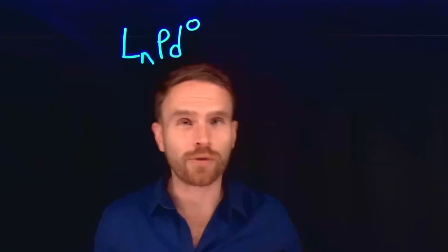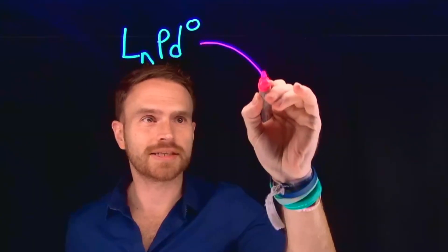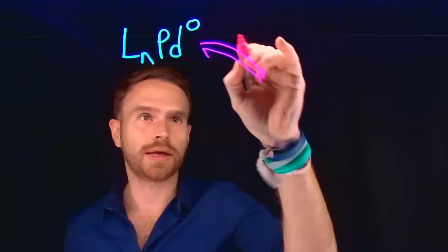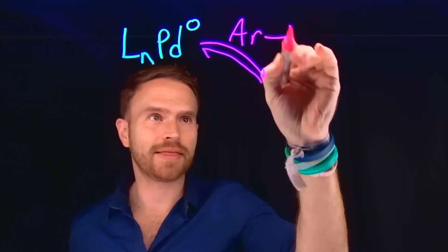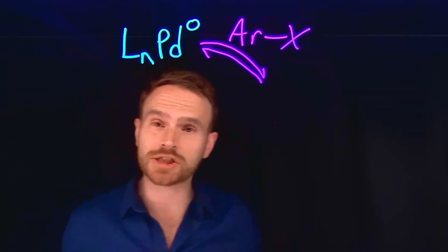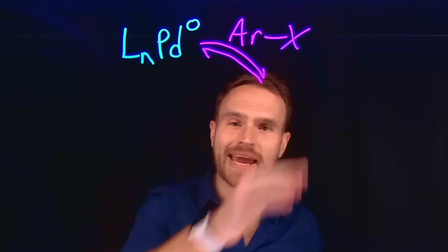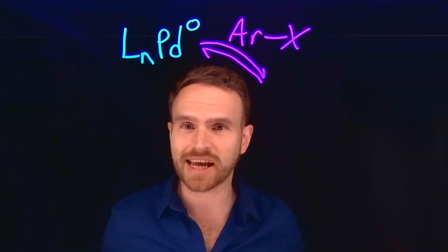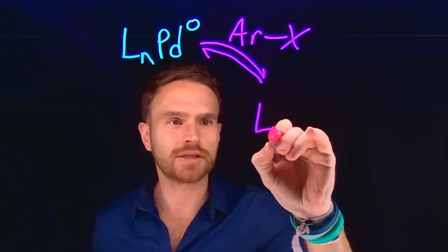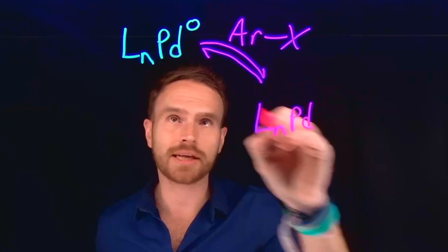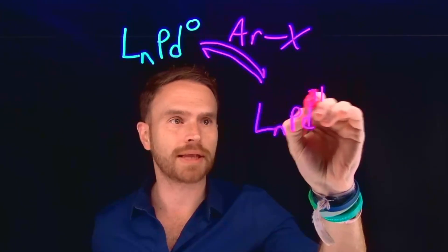In the generally accepted catalytic cycle, the first step of this reaction is oxidative addition between the aryl halide and the palladium catalyst, which inserts itself in between the carbon-halide bond, forming what's called oxidative addition and allowing us to change the oxidation state of palladium from palladium(0) to palladium(II).